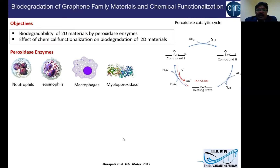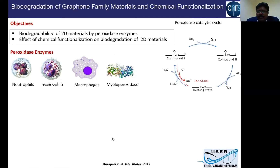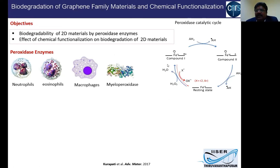We focused on peroxidase enzymes because, while the human body has hundreds of enzymes, peroxidase enzymes are activated in the presence of hydrogen peroxide and generate active radical species — Compound I and Compound II — which are strong oxidizing agents. They play an important role in antimicrobial activity, and we investigated whether these reactive intermediate species could also degrade graphene materials in the body.